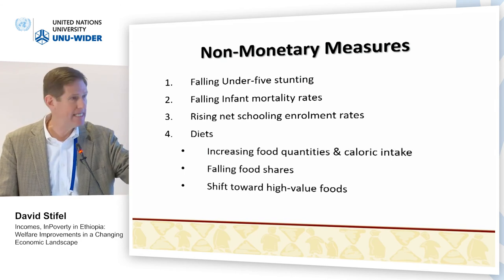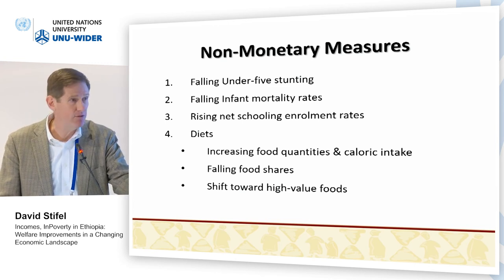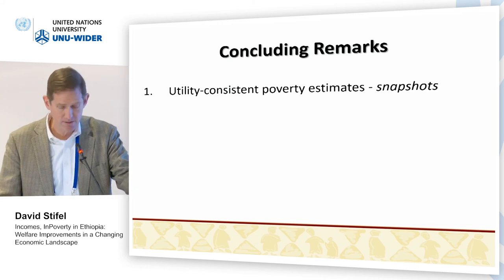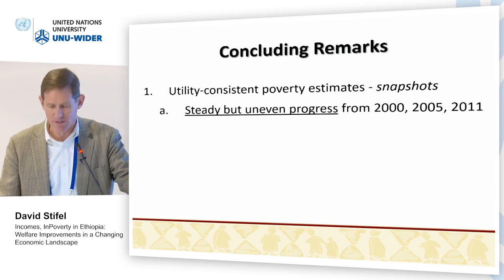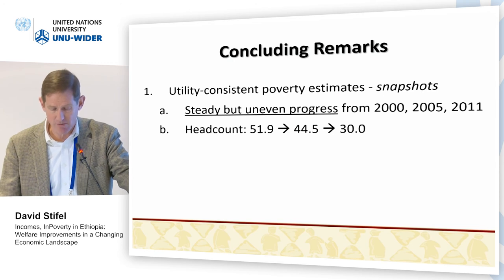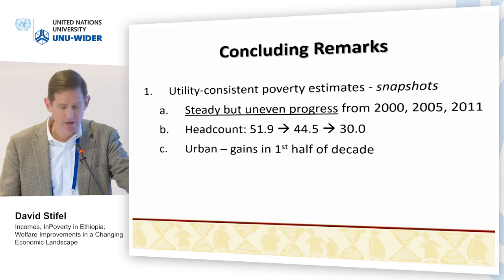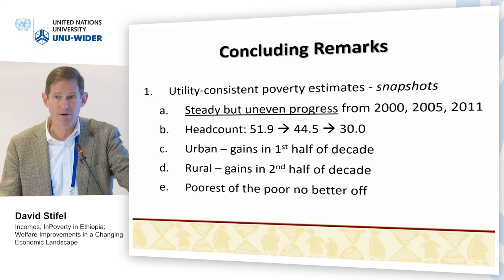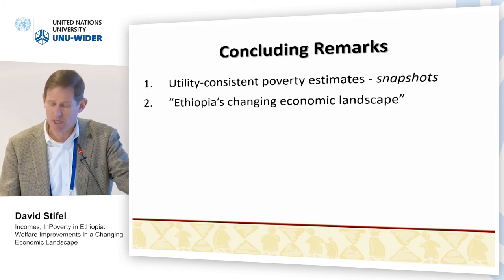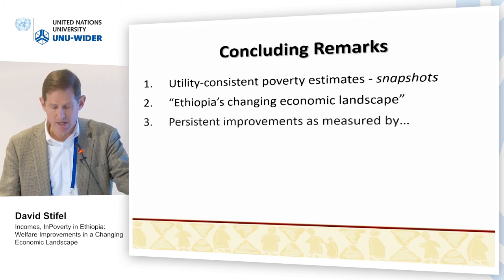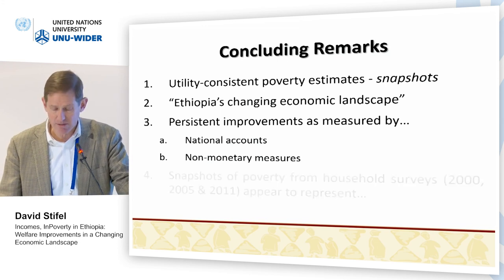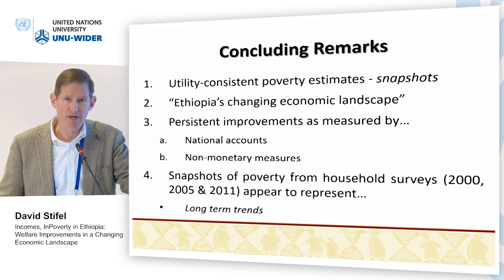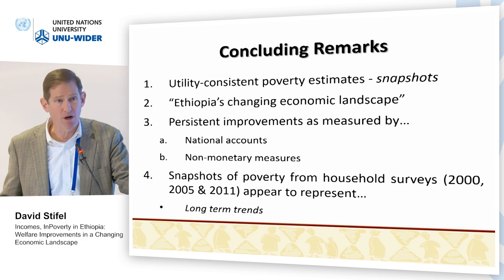In conclusion, using this utility-consistent approach to measuring poverty lines, we have snapshots showing steady but uneven progress over the decade: the national headcount ratio fell from 52 percent to 30 percent. In urban areas the gains were in the first half of the decade; in rural areas, the second half. Disconcertingly, the poorest of the poor are no better off. Ethiopia's changing economic landscape provides the context for this, and we see persistent improvements in national accounts and non-monetary measures. In short, these snapshots from the household surveys appear to represent long-term trends — though uneven, and a bit more muted when we look at the non-monetary measures. Thank you.